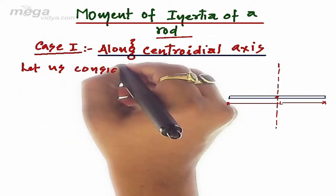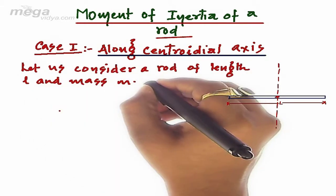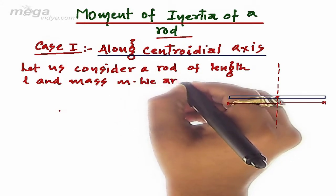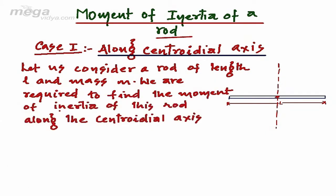Let us consider this rod, the length of the rod L and its mass M. We are required to find the moment of inertia of this rod along the centroidal axis, that is the axis passing through the center and perpendicular to its plane.